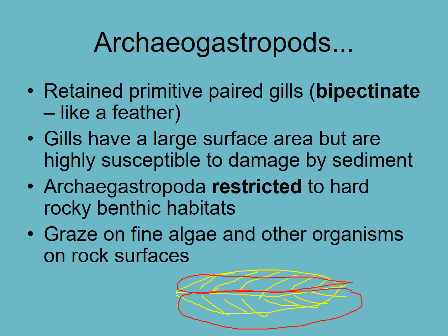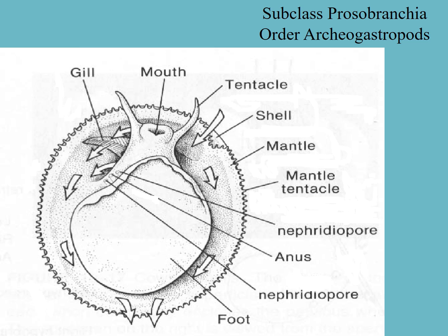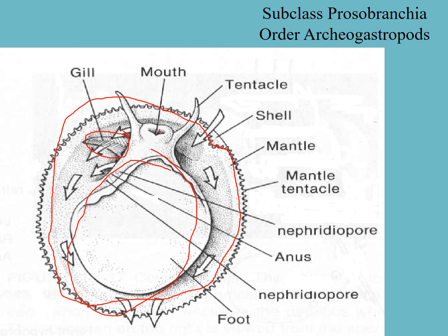A monopectinate gill, which we'll see a little bit later, means that it has one side. The reason that's important is because these bipectinate gills traveling across sediment are very susceptible to damage by fine sediment, and so these things are restricted to hard substrates. Here's the bipectinate gill — mouth, muscular foot, the mantle goes along the edge of the shell. So this is your typical limpet, and you can see that it looks almost exactly like the chiton, except it has one shell instead of eight. From the bottom they look almost exactly the same.